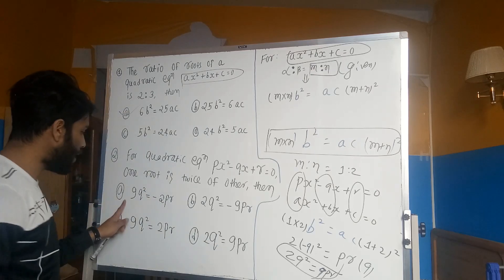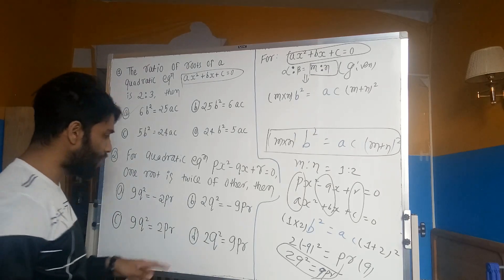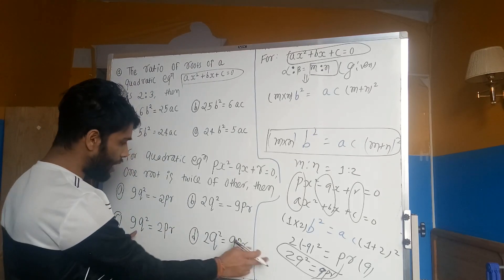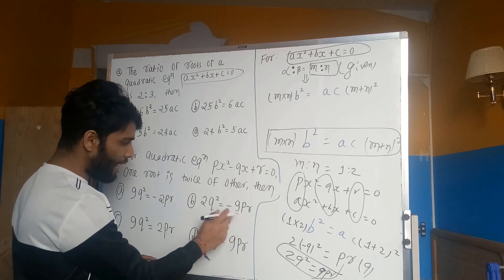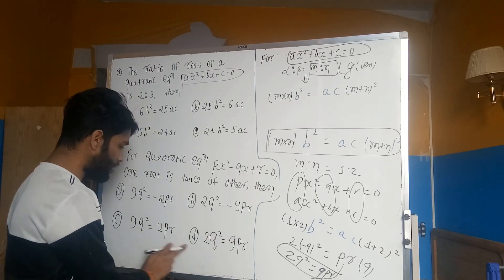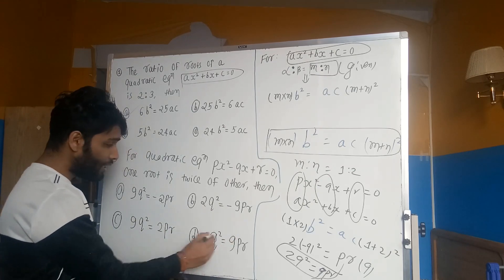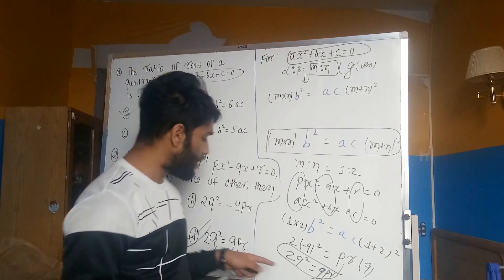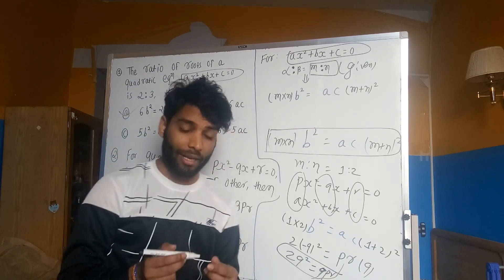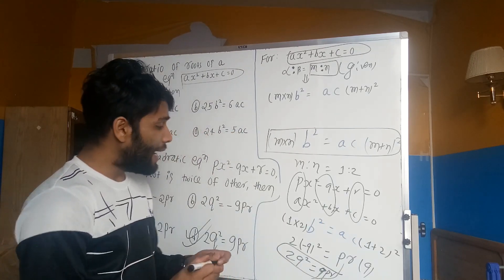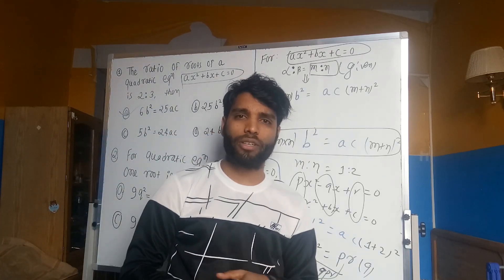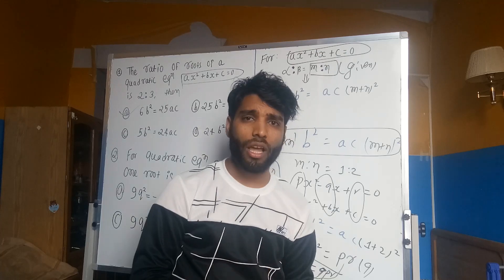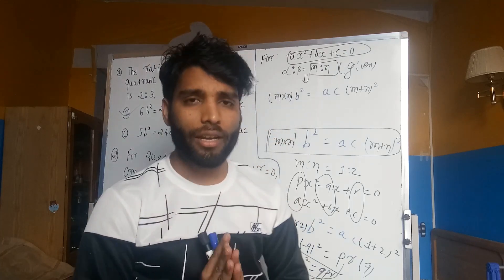If 2Q² equals 9PR, where we have 2Q² equals 9PR — that's all. If you like the video, like, comment, and share with us. Take care.